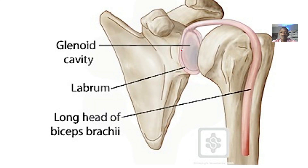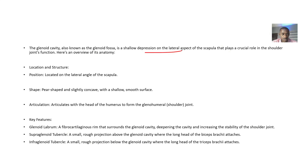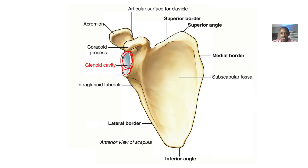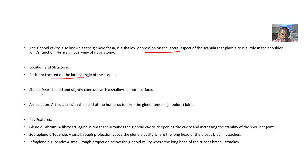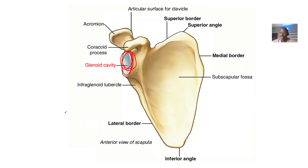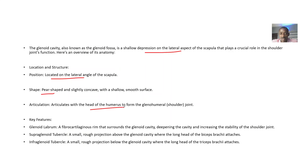It helps to stabilize your shoulder joint. For location and structure: it is positioned on the lateral angle of the scapula. For shape, it is basically pear-shaped, slightly convex with a shallow and smooth surface. For articulation, it articulates with the head of the humerus to form the glenohumeral, or shoulder joint.